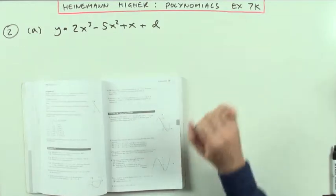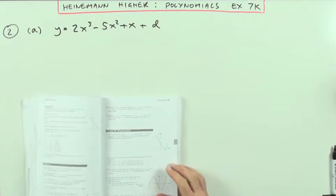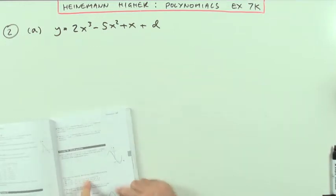Heinemann Higher, chapter 7, polynomials, mixed exercise 7k, question 2. There's 3 bits, so it'll be a wee bit long. For each of these functions, and there's going to be 3 of them...